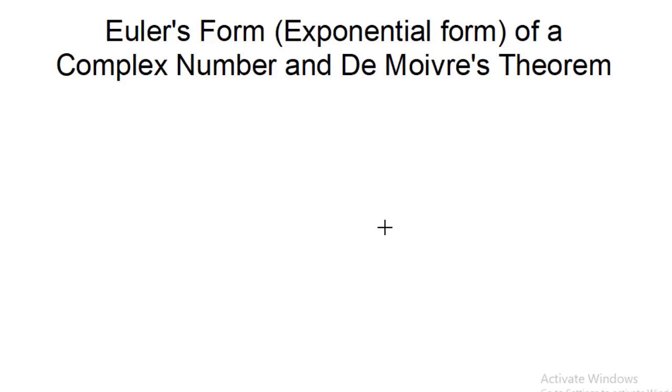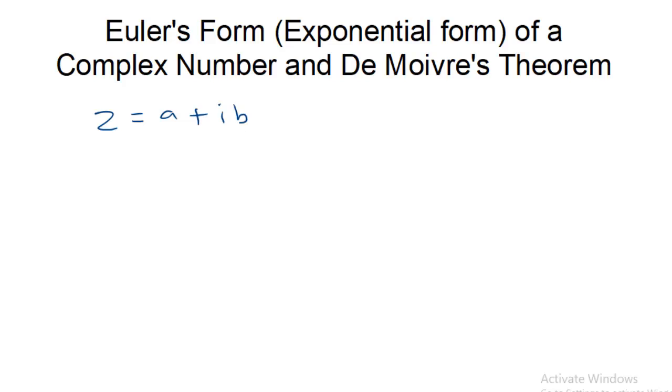Hello students, let us study about one more form of a complex number known as Euler's form. We know that a complex number can be represented in the standard form as a + ib, where a is called the real part and b is called the imaginary part.